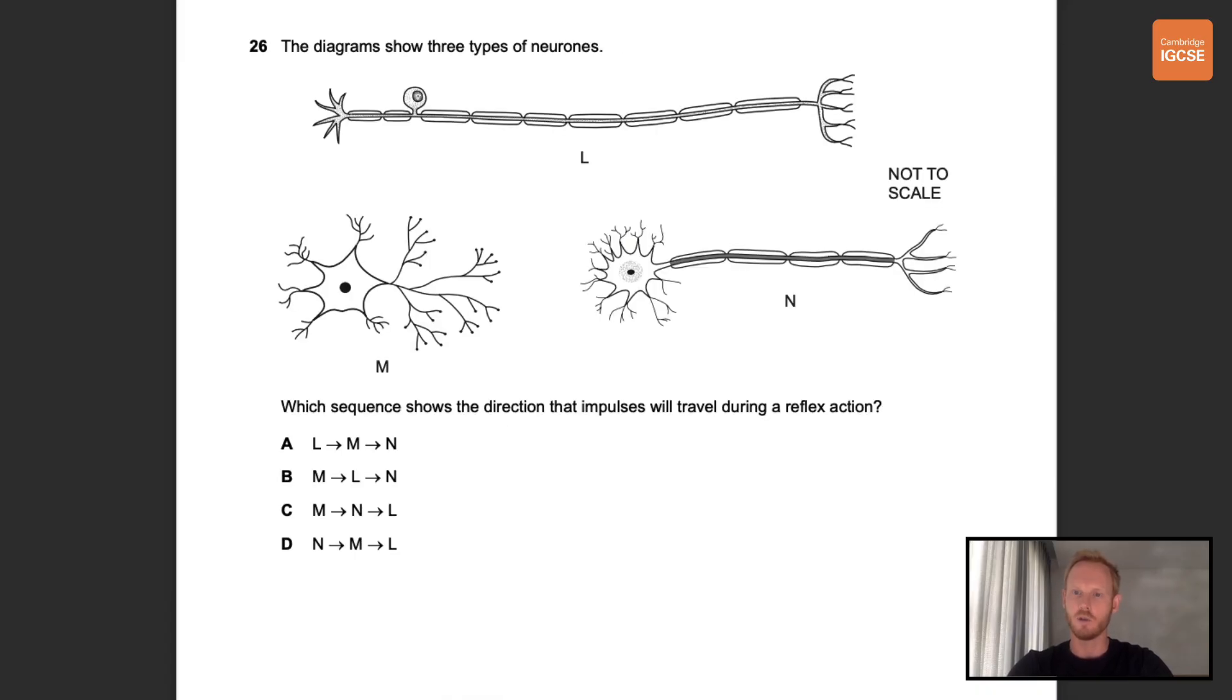Number 26. The diagram shows three types of neurons. L is a sensory neuron, M is a relay neuron, and N is a motor neuron. Which sequence shows the direction that impulses will travel during a reflex action? So during a reflex action, the stimulus is detected by a receptor, and an impulse is sent along a sensory neuron to the spinal cord. The impulse is passed on to a relay neuron, and then to the motor neuron, which directs the impulse to an effector, that is, a muscle or gland. The correct answer is therefore A, L to M to N.